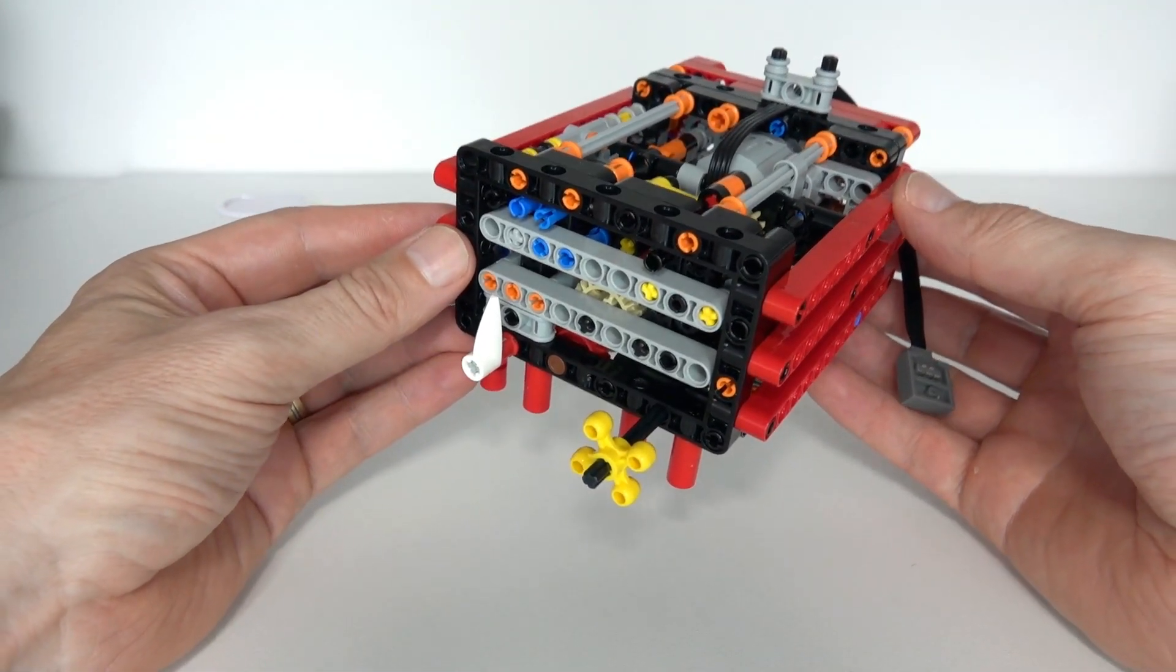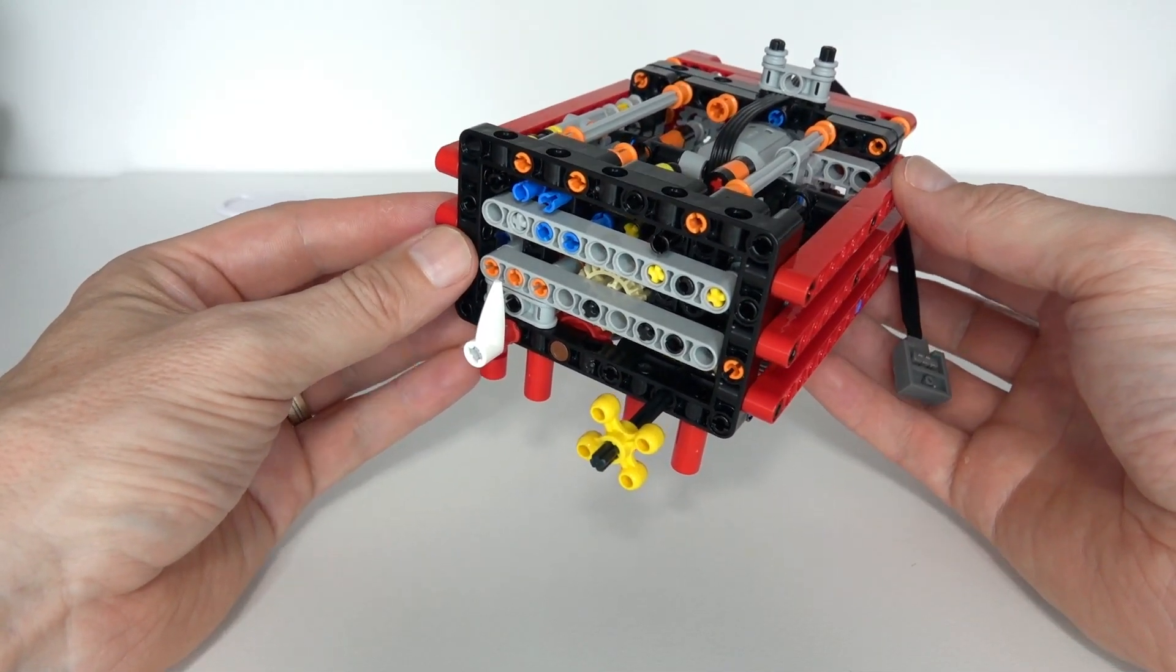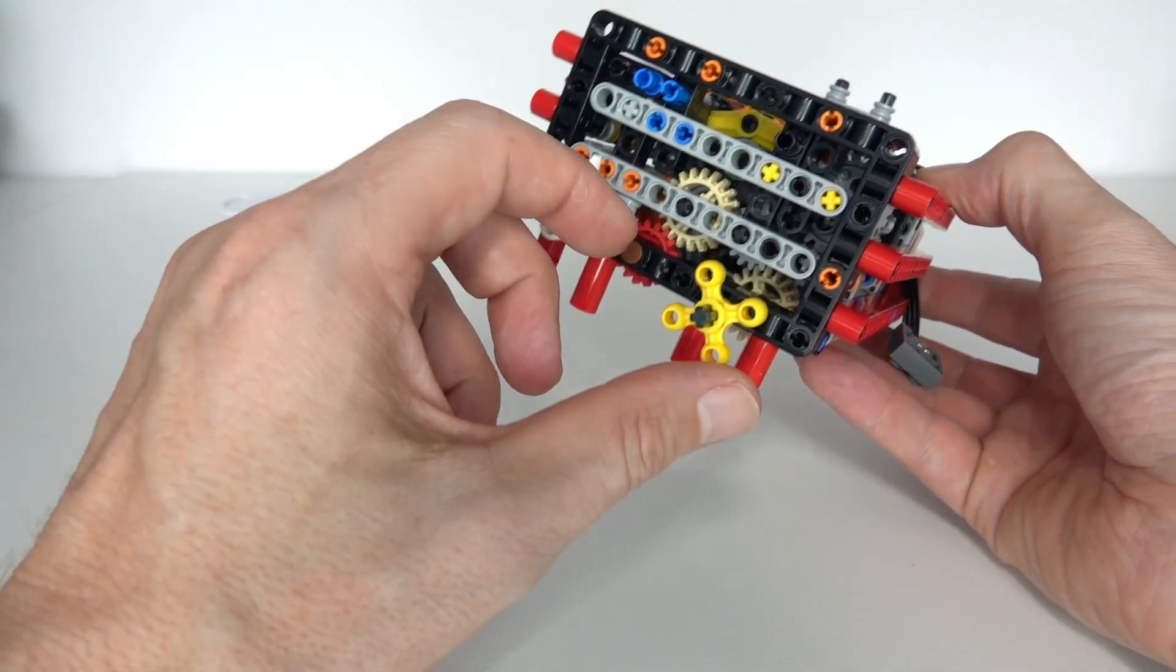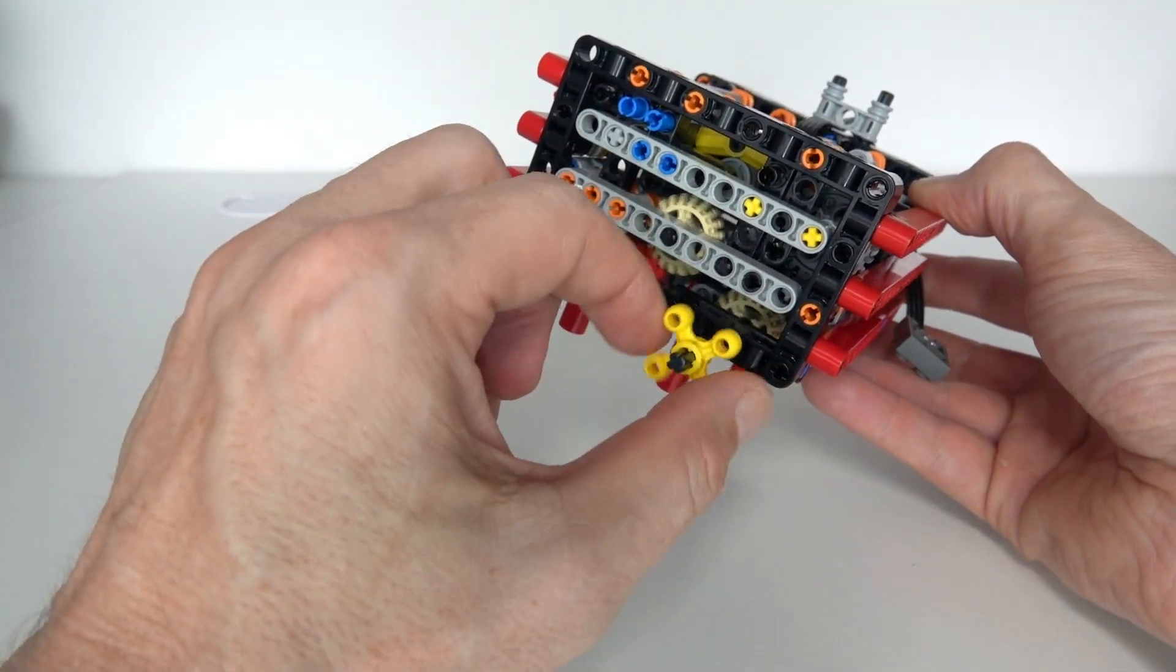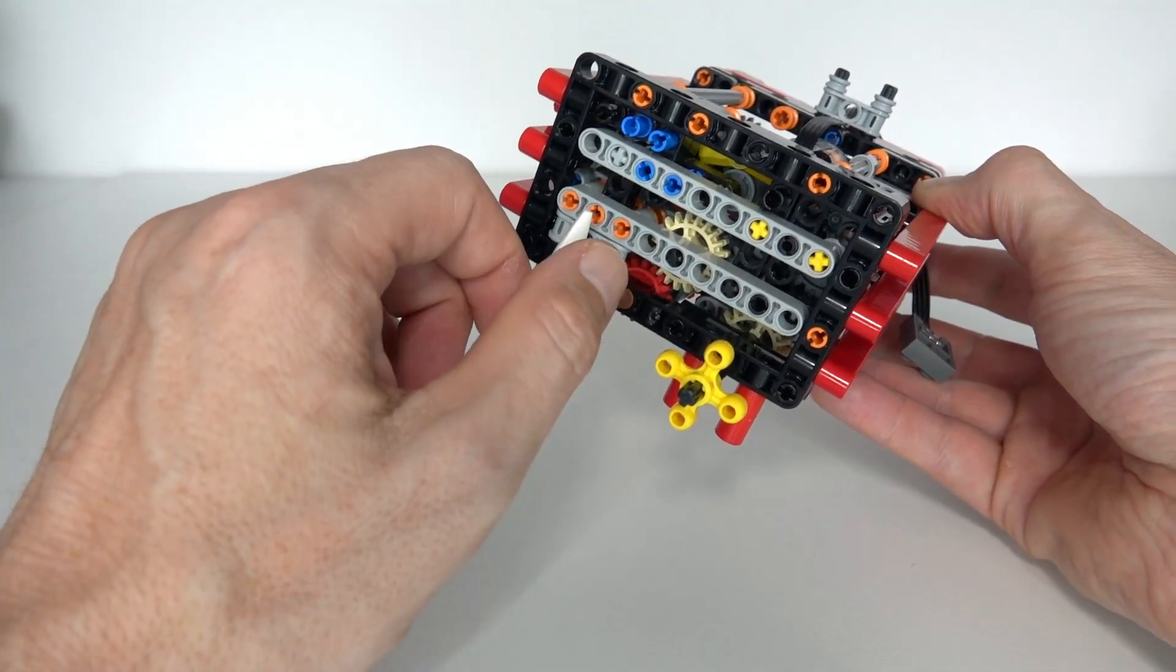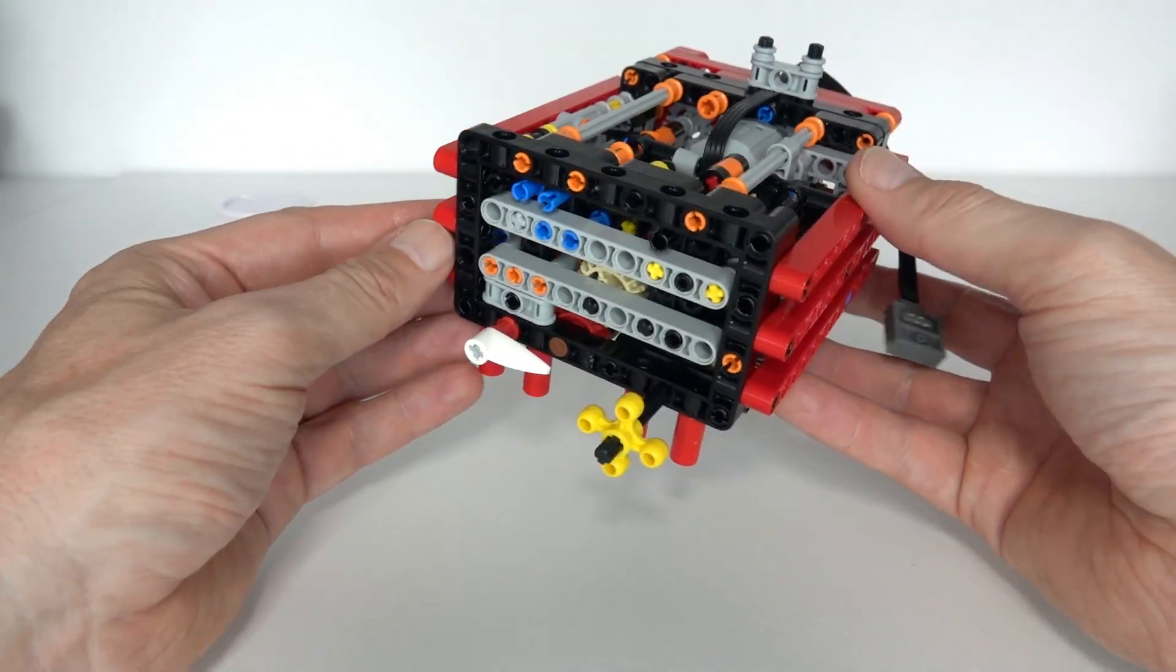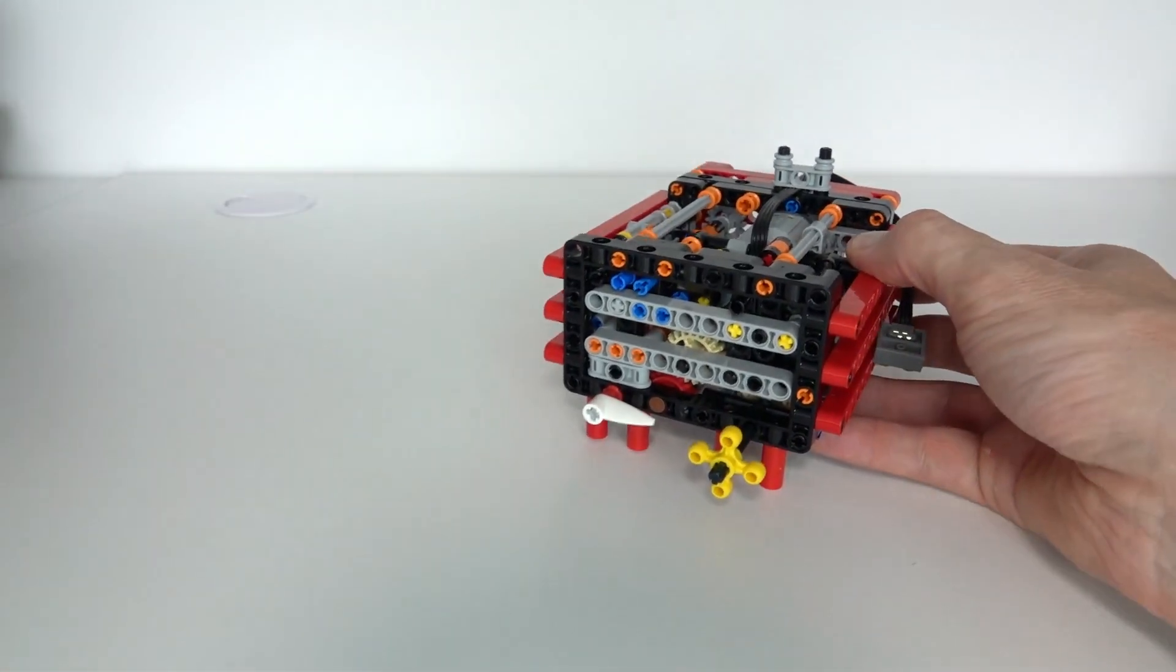So how do you implement two different functions using a single gearbox and one motor? The idea is to realize, of course, that a motor can go forwards and backwards. And what you want to do is when the motor goes forwards, for example, you might drive the main drive shaft. And when the motor goes backwards, it will change the gears of the gearbox. So how do you get a motor to behave differently depending on the direction it's going in? Well, the trick is to use a kind of setup like this.